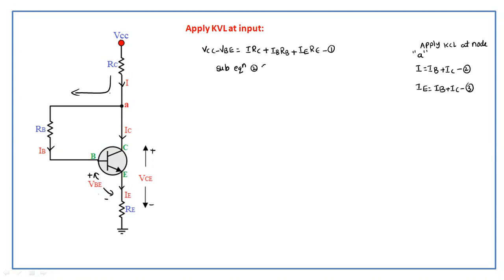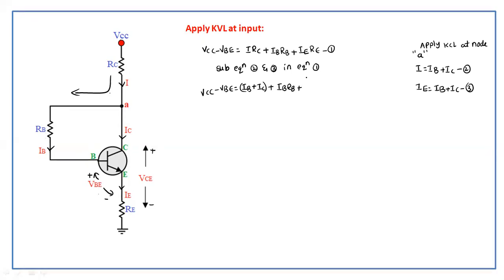The next step is to substitute equations two and three into equation one. In place of I we substitute IB + IC, and in place of IE we also substitute IB + IC. So we get: VCC minus VBE = (IB + IC)·RC + IB·RB + (IB + IC)·RE.